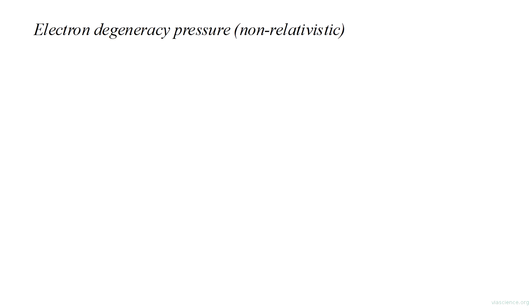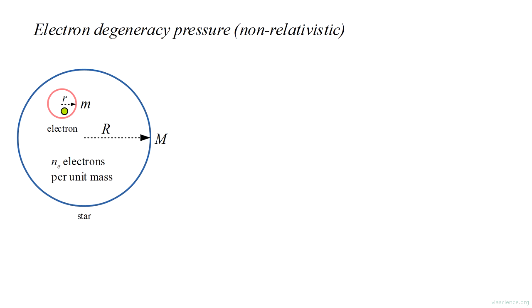Let's denote the star's radius and mass by big-R and big-M. Assume that each electron, with mass little m, is constrained to a region of radius little r, and that there are n_e electrons per unit mass.